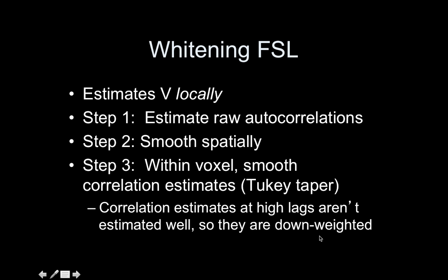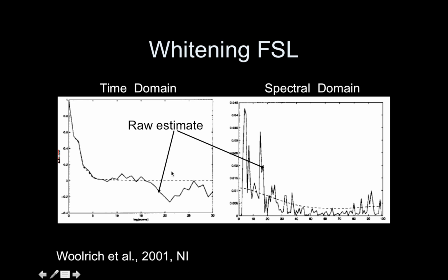Correlation estimates at high lags aren't estimated well, so they're down-weighted or set to zero. The Tukey taper smooths through the data we know are reliable for early lags, and then beyond a certain lag assumes the time points are uncorrelated — a pretty good assumption for imaging data. Comparing the raw autocorrelation estimate and the Tukey-tapered version in the spectral domain shows the taper simply smooths things out.